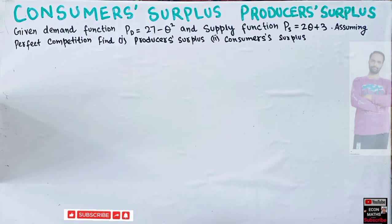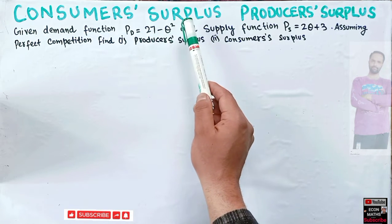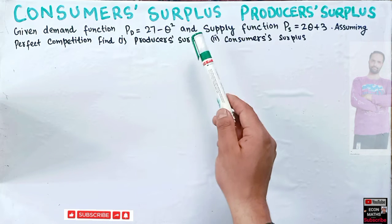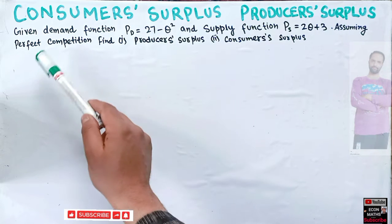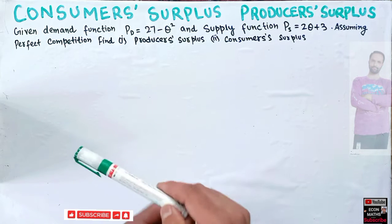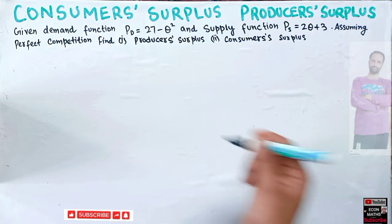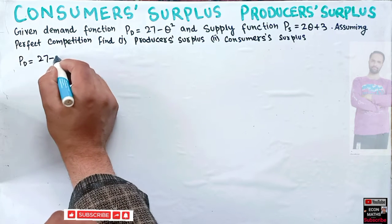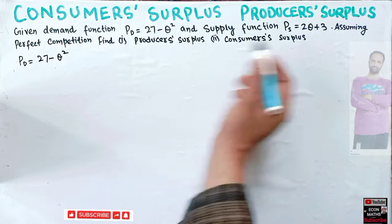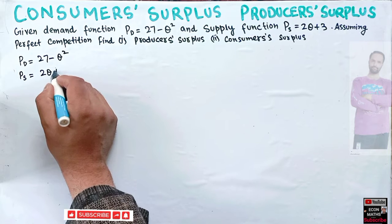In this video we will learn how to calculate producer surplus and consumer surplus from an example. The demand function is given as PD = 27 minus Q squared, where P is price and Q is quantity. The supply function is PS = 2Q plus 3. Assuming perfect competition, we need to find the producer surplus and consumer surplus.